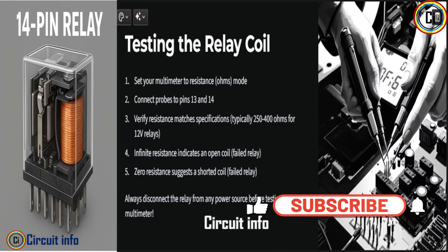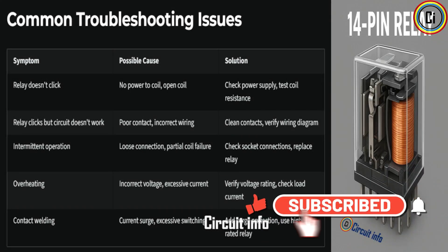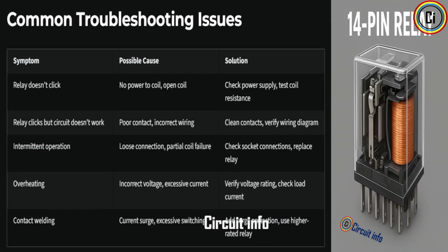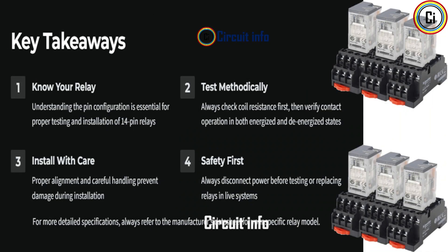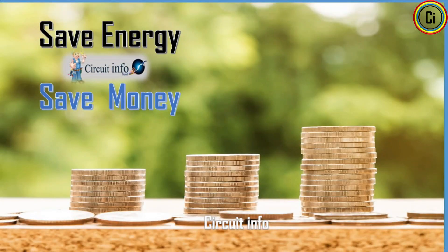A 14-pin relay is essentially a 4-pole double-throw industrial relay that saves space, wiring, and cost while offering flexible multi-circuit switching. Whether it is automation, motors, lighting, or safety systems, this relay plays a vital role in control engineering. If you found this explanation useful, don't forget to like, share, and subscribe for more detailed tutorials on electrical and automation topics.